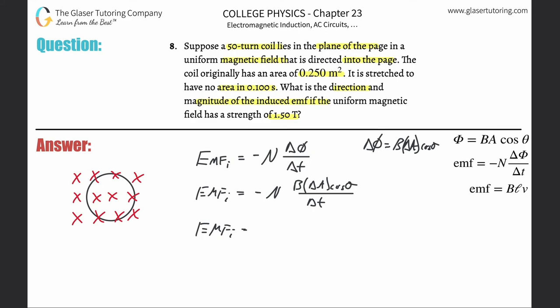It tells us the number of turns is 50. The magnetic field is 1.5, that's not changing. The area is changing: started at 0.250, went to zero, so it's final minus initial, zero minus 0.25.